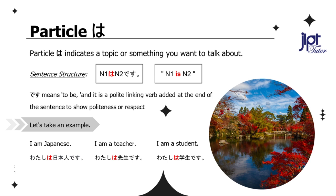Particle wa. Particle wa indicates a topic or something you want to talk about. The sentence structure is: N1 wa, N2 desu — meaning N1 is N2, where N1 and N2 are nouns about whom we are talking. The hiragana 'ha' we pronounce as 'wa' when we use it for the particle.